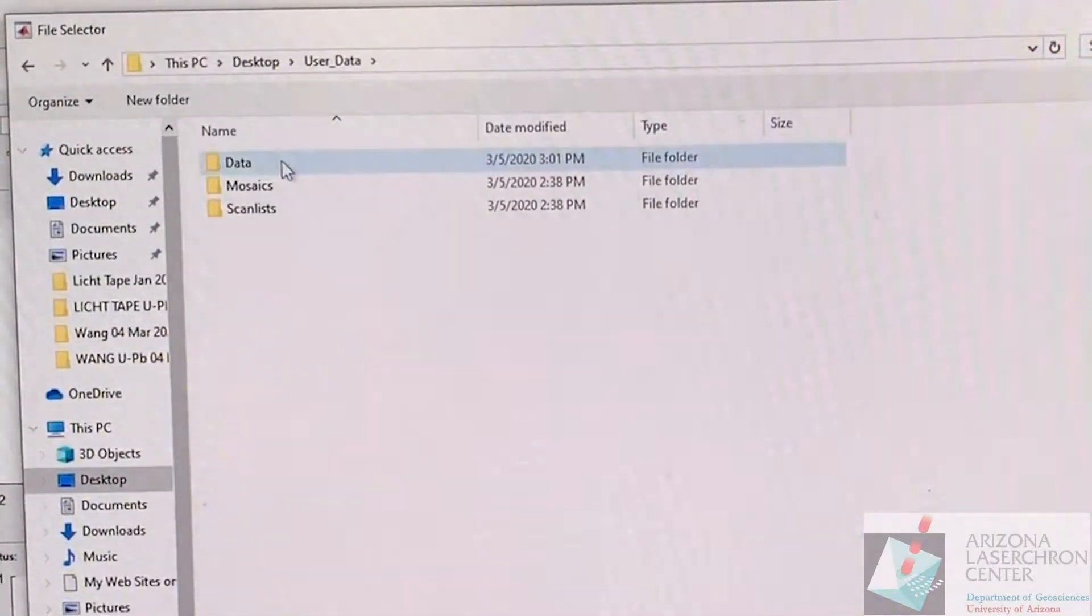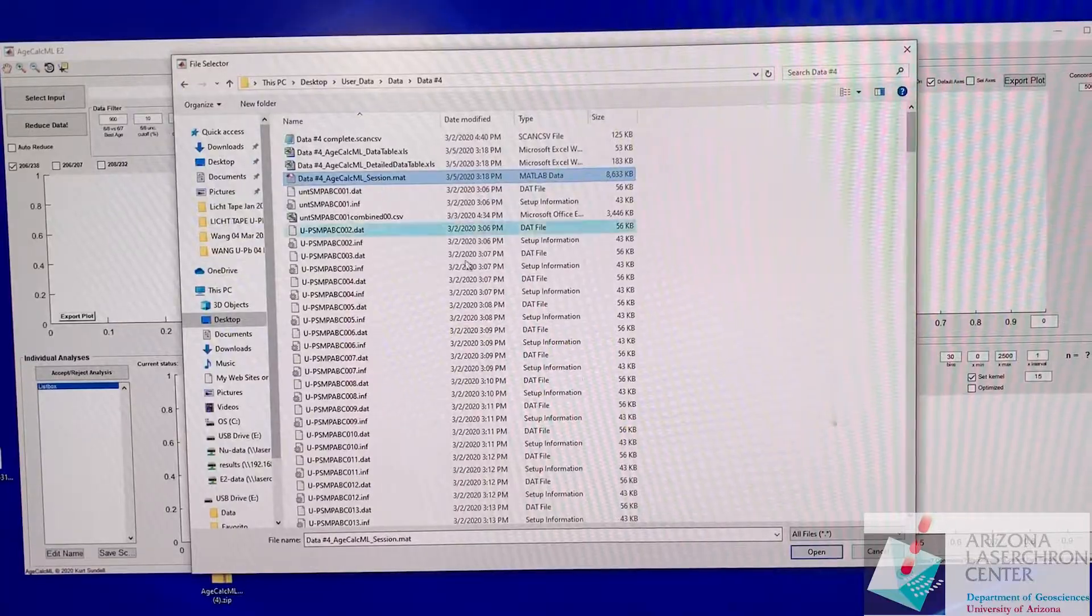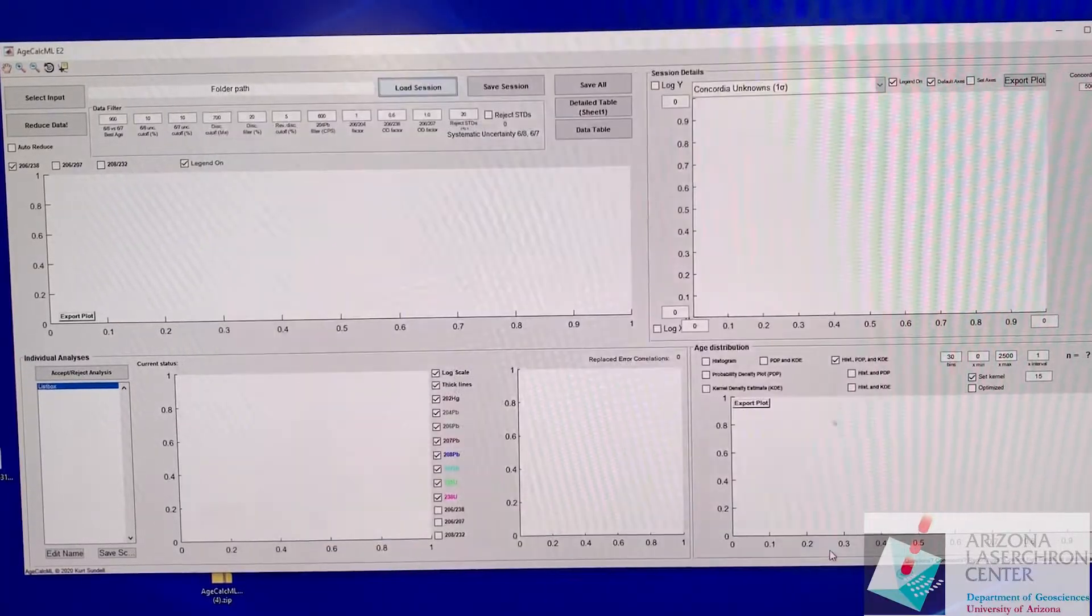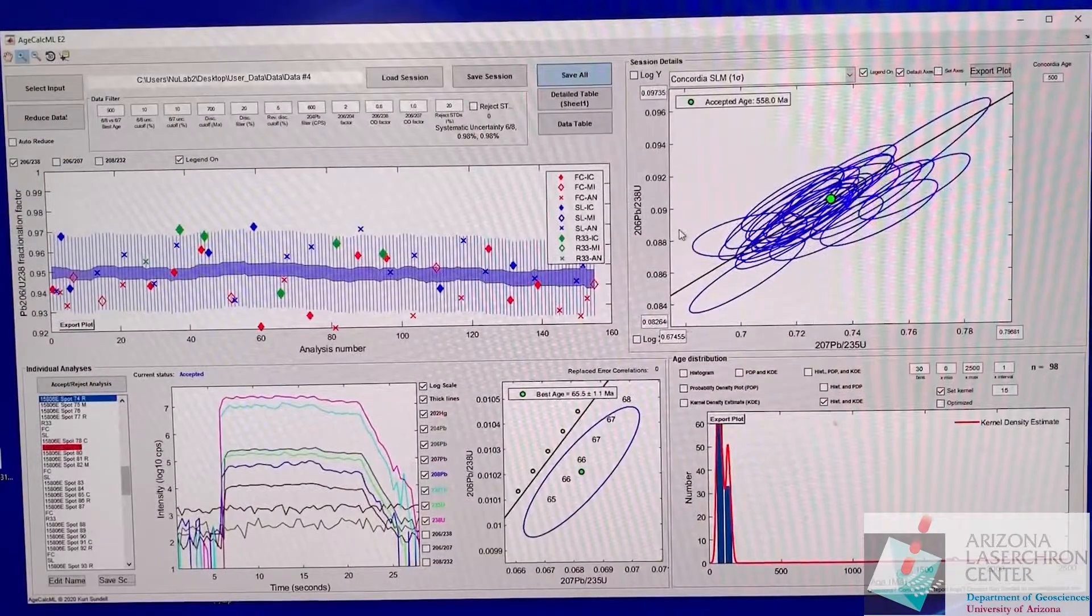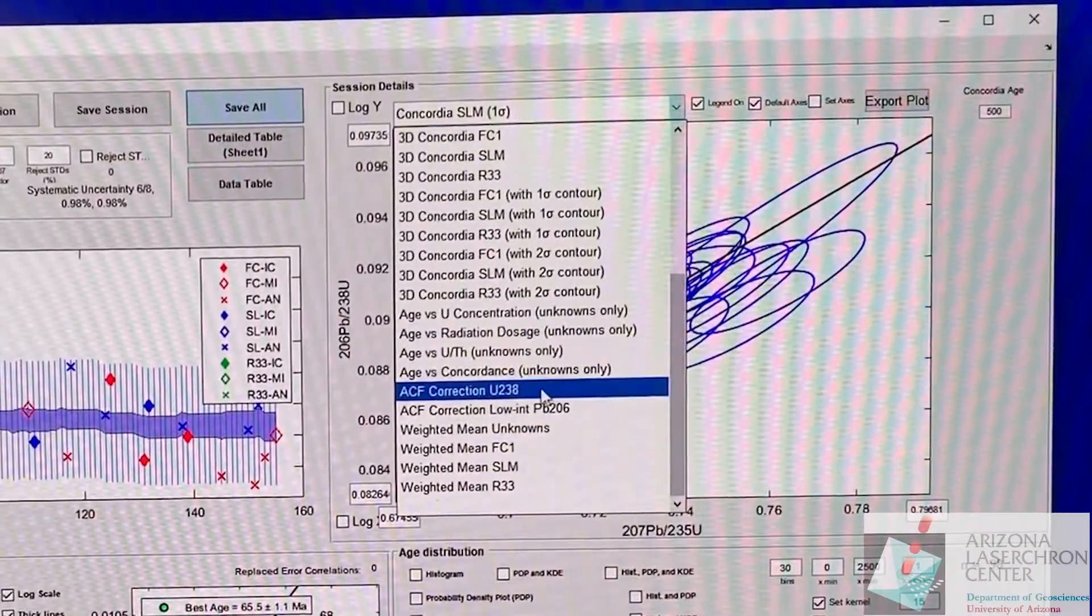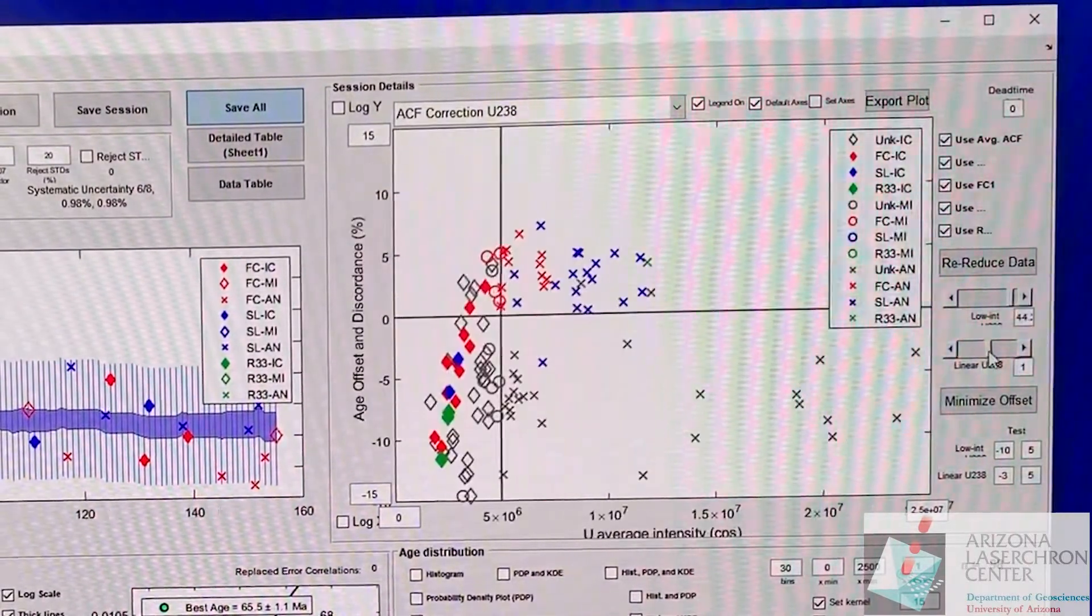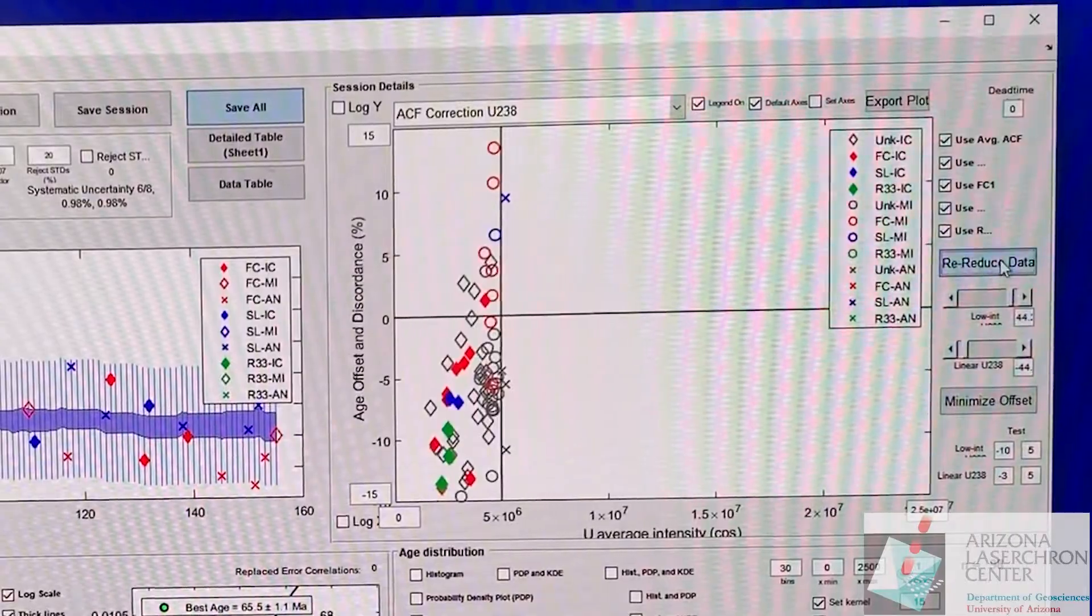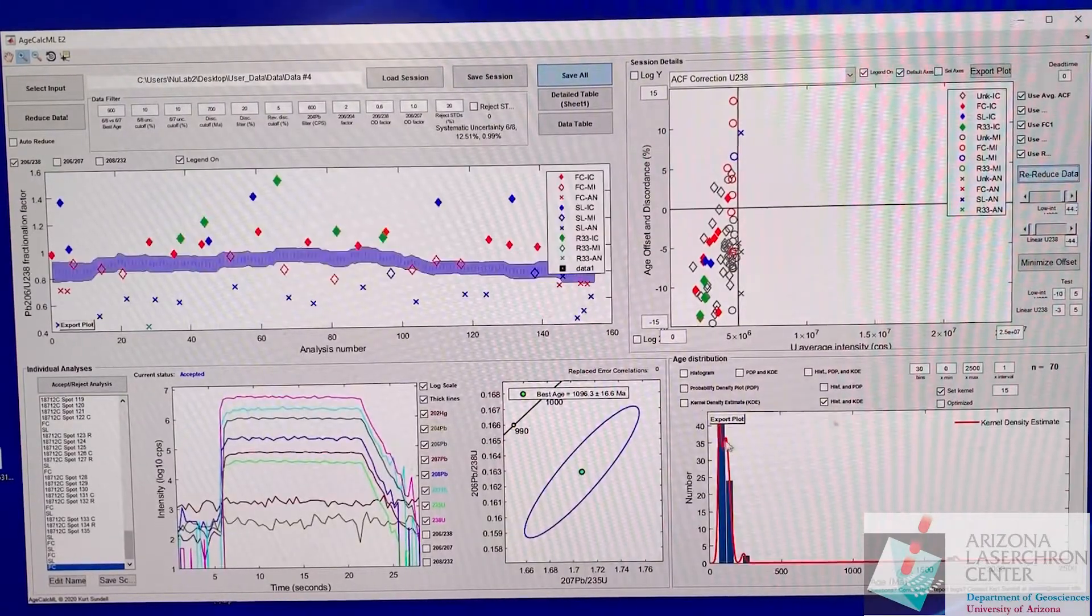Desktop user data, we're going to look for that dot mat file. If we open that, what it's going to do is load the instance of AgeCalcML and close the blank one and now you pick up where you left off. You can go back to say your ACF correction and change that however you like and re-reduce that and see what it does to your data and save it if you like a better version of that.